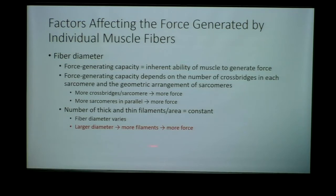The number of thick and thin filaments per sarcomere is constant — we cannot change how many actin and myosin are on a single sarcomere. What we can change is how many myofibrils are in that muscle. When you work out and your muscle gets bigger, you're not changing actin and myosin — that's constant and will never change. What you can change is adding more fibers and more fascicles.